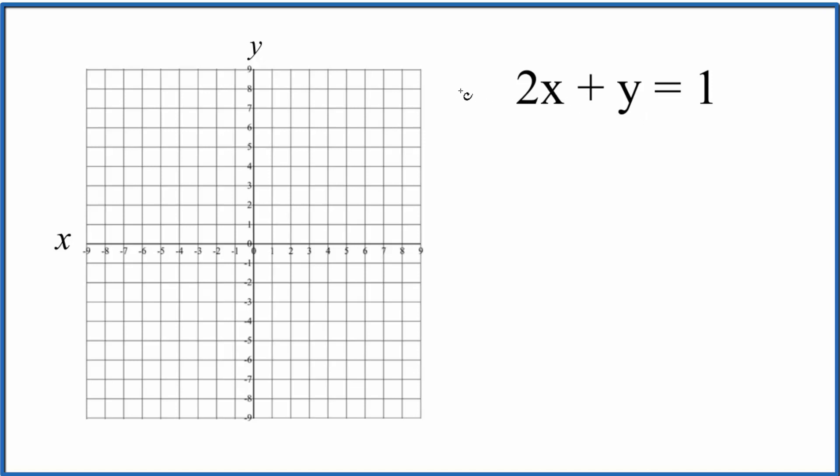Probably the easiest thing to do is add a negative 2x to both sides. When we do that, we have negative 2x and 2x. That cancels out. So we have y equals 1 minus 2x.